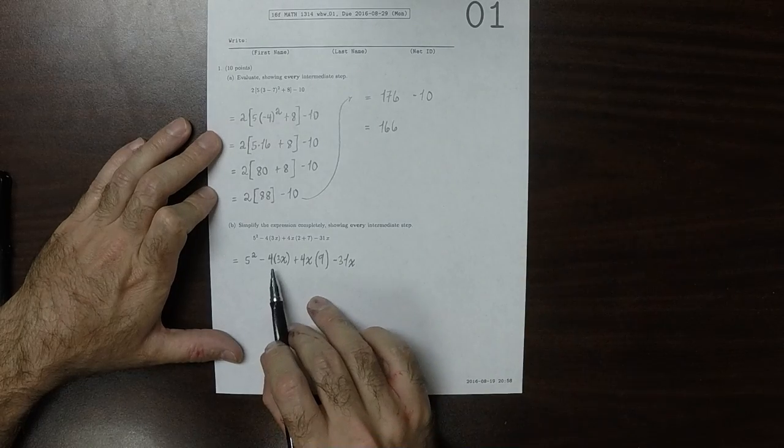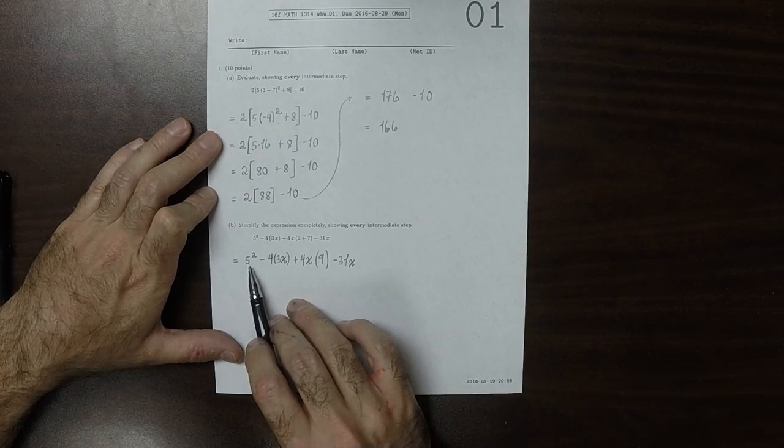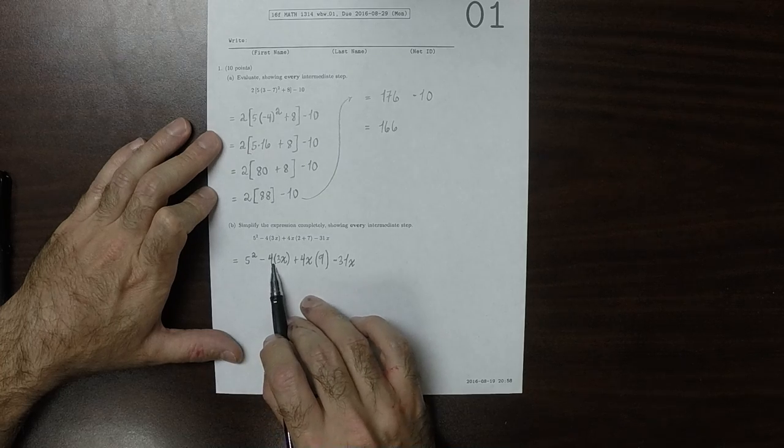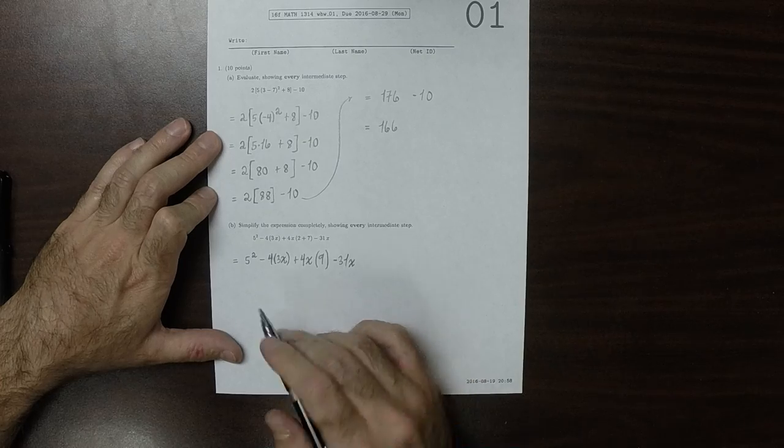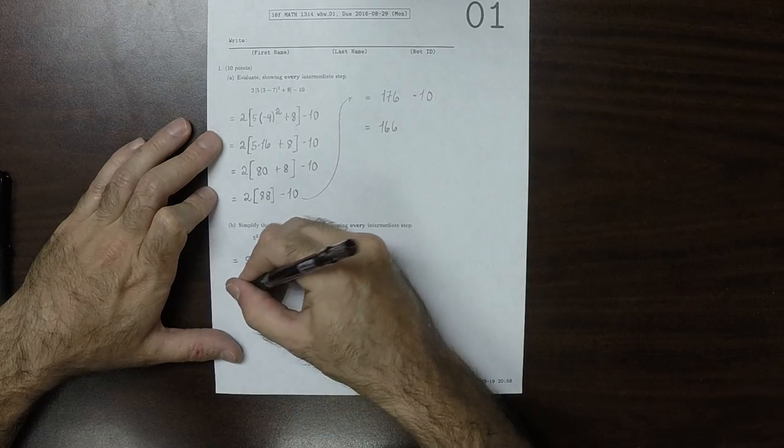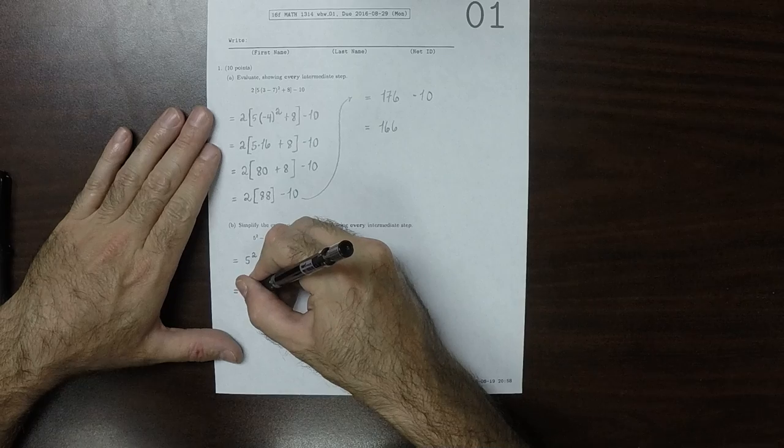Okay. So then now this is an exponentiation, that's a multiplication, that's a multiplication, and that's a subtraction. So of those, exponentiation occurs first. So this would be 25 minus 4 times 3x